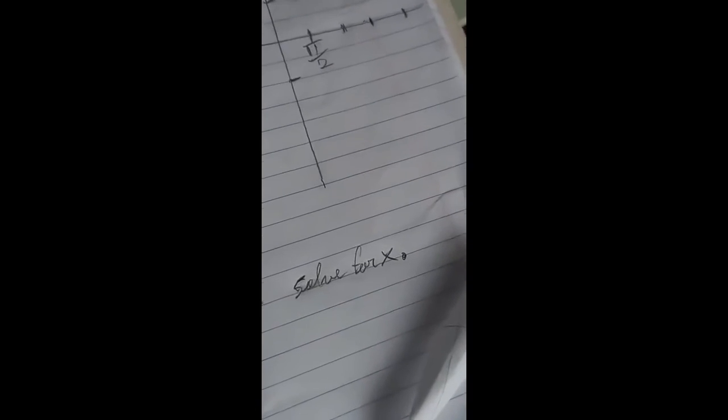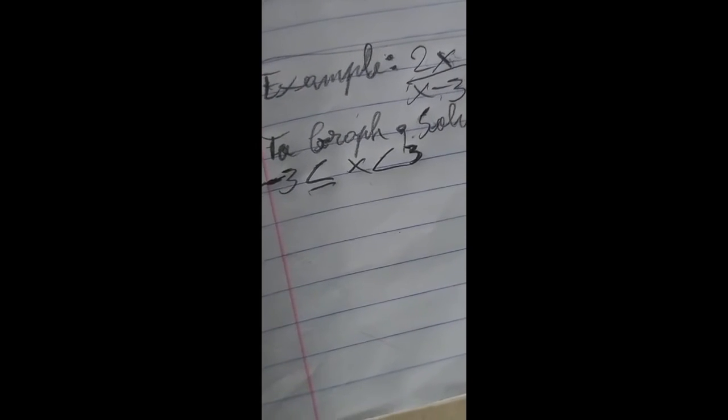So here is the graph. To graph it, you first have to solve for x, and this is the result: negative 3 less than negative x less than 3.